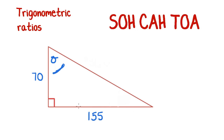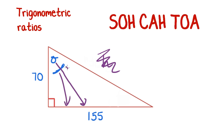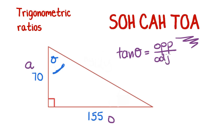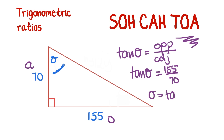Say our mystery angle is up here. The hypotenuse doesn't factor in. The angle splays out to create this line, making it the opposite (155), and the remaining side is the adjacent (70). We have O and A — tangent. Tan of theta equals 155 over 70. So theta equals the inverse tan of 155 over 70, giving theta equals 66 degrees.